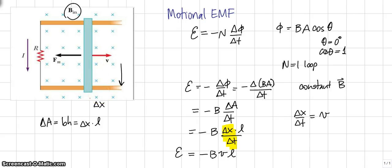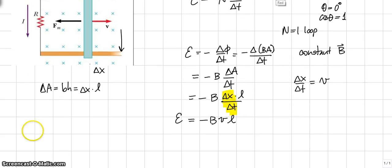What we have is a flux into the page because the magnetic field is pointing into the page. So the flux is into the page, and the flux is increasing.